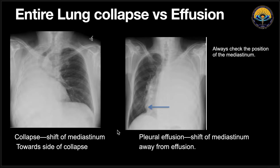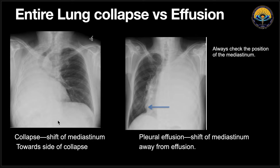Comparing entire lung collapse with pleural effusion: both can cause complete whitening of one lung. However, in lung collapse the trachea is pulled toward the whitened part, because the collapsed lung pulls the trachea toward itself. In pleural effusion, the trachea is pushed away from the whitened part, toward the opposite side. So: in collapse there is shift of the mediastinum toward the collapse, whereas in pleural effusion there is shift away from the effusion.